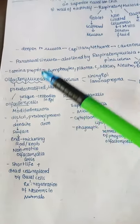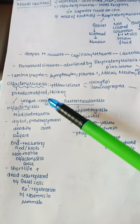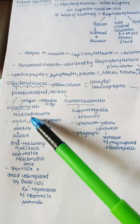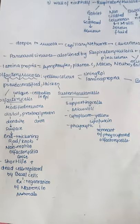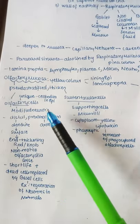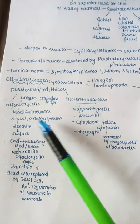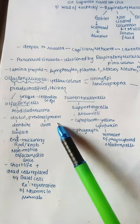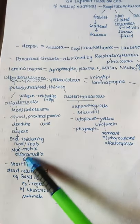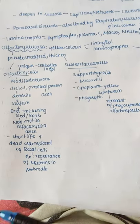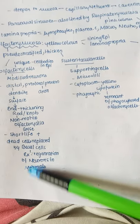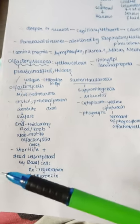Olfactory cells are unique because they contain cell bodies in the epithelium. They are modified neurons having distal and proximal processes. The distal process is called a dendrite, which goes up to the surface and ends in a thickening rod or knob. Non-motile olfactory cilia arise from there. They have a short life and dead cells are replaced by basal cells — this is the only regeneration of neurons in mammals.